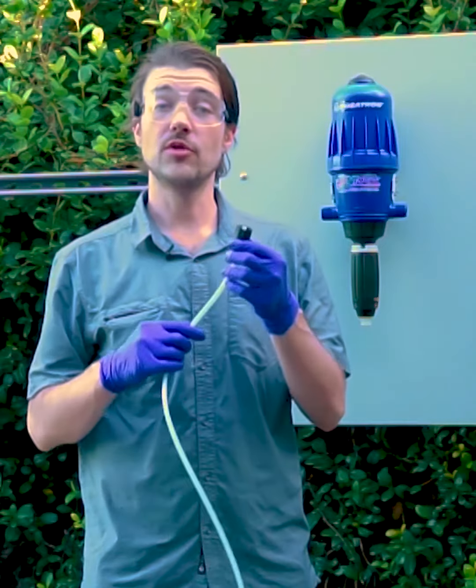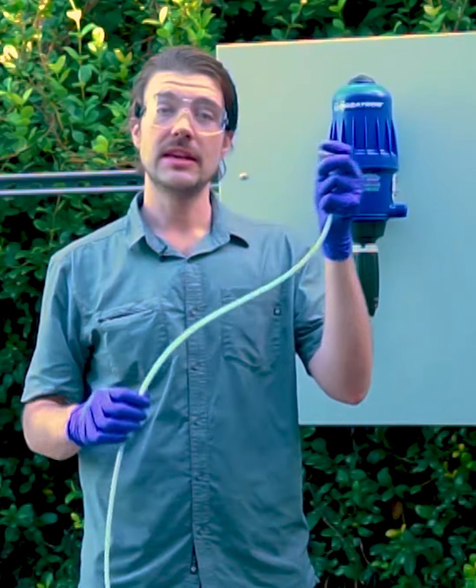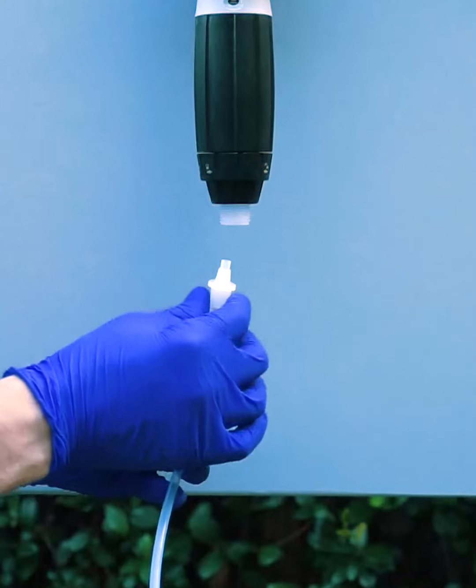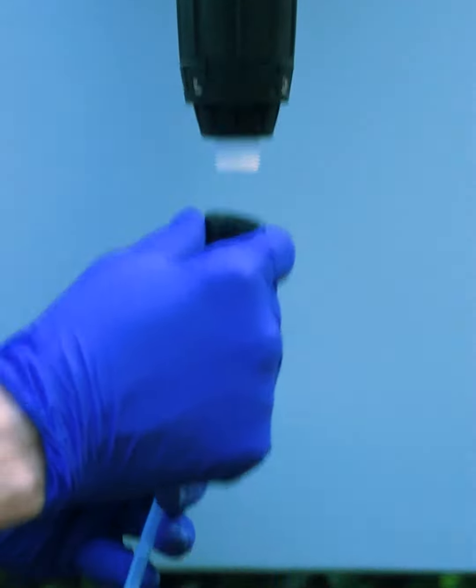Now, if you're replacing the whole assembly, it'll come with new hose nuts and ferrules. If you're replacing just the hose, you'll want to remove the ferrule and the hose nut and save those for your new piece.